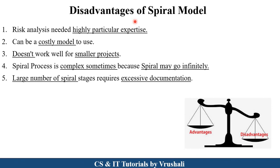The disadvantages of the spiral model: The most important disadvantage is that risk analysis requires highly specialized expertise. It is a very costly model, so it doesn't work well for smaller projects. The spiral model can sometimes go into a complex mode because of continuously changing requirements and may go into an infinite loop. Additionally, with a large number of spiral stages, complex documentation is created.